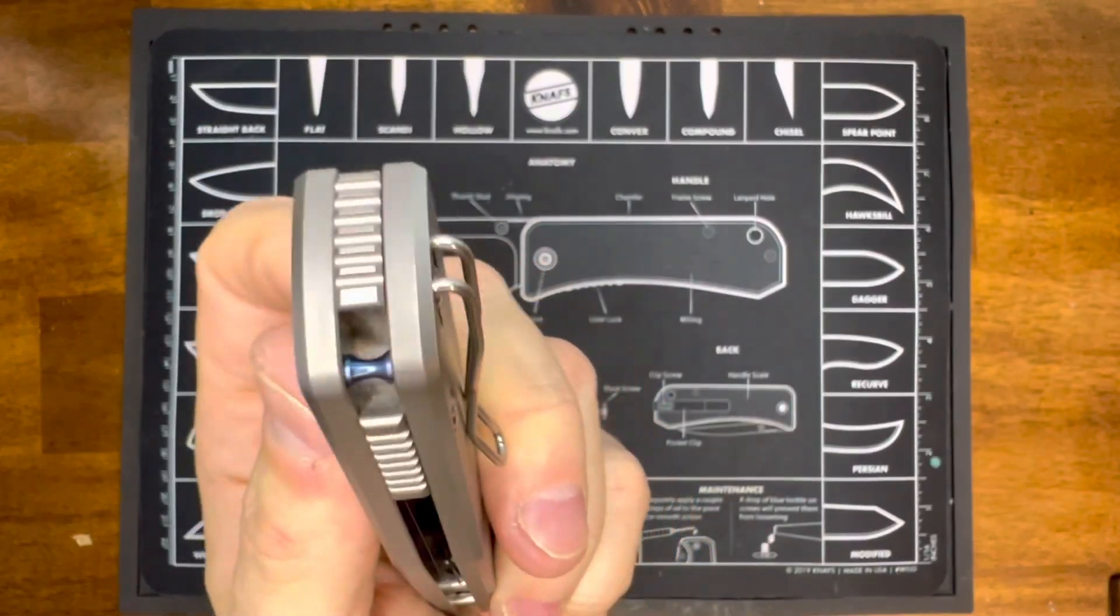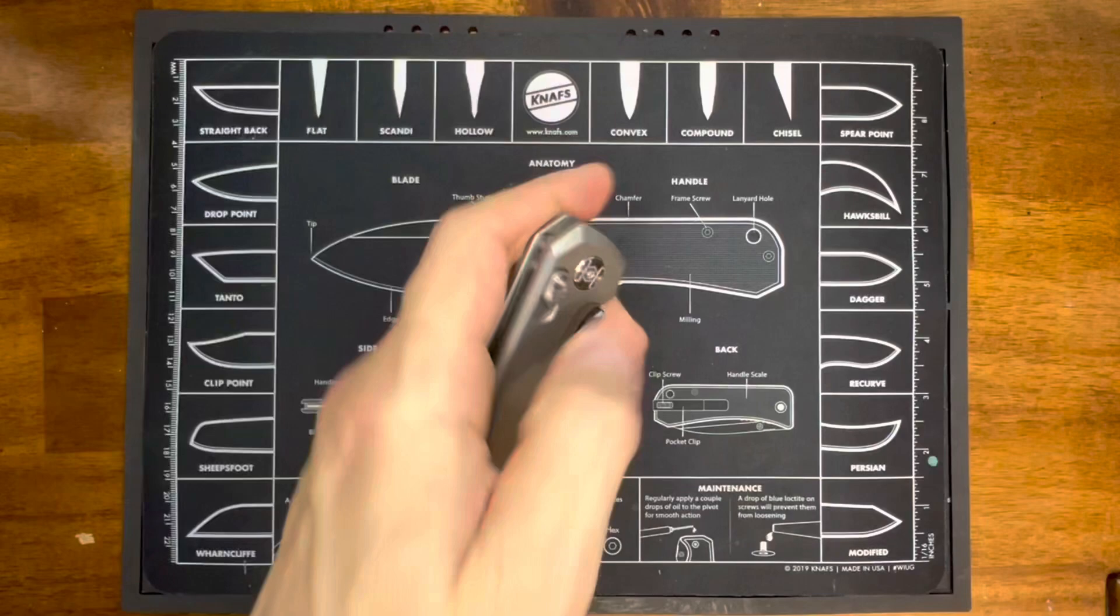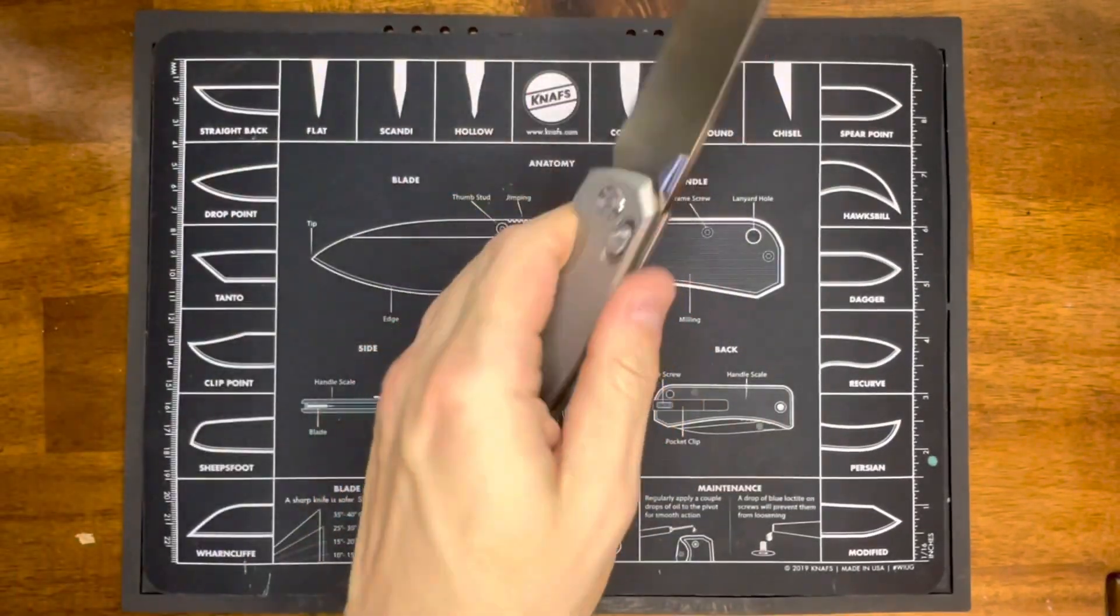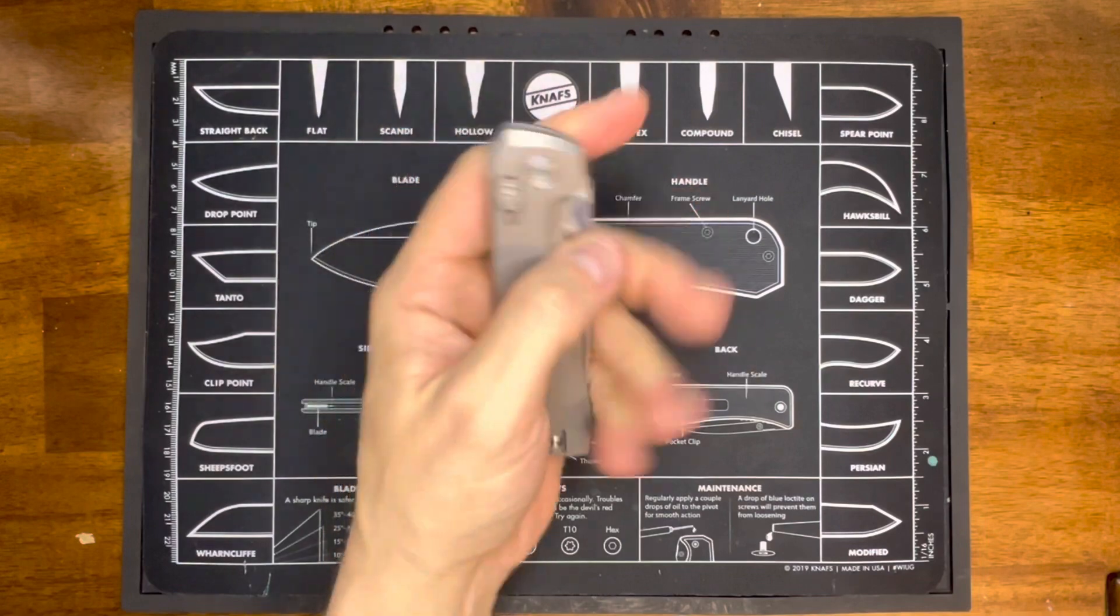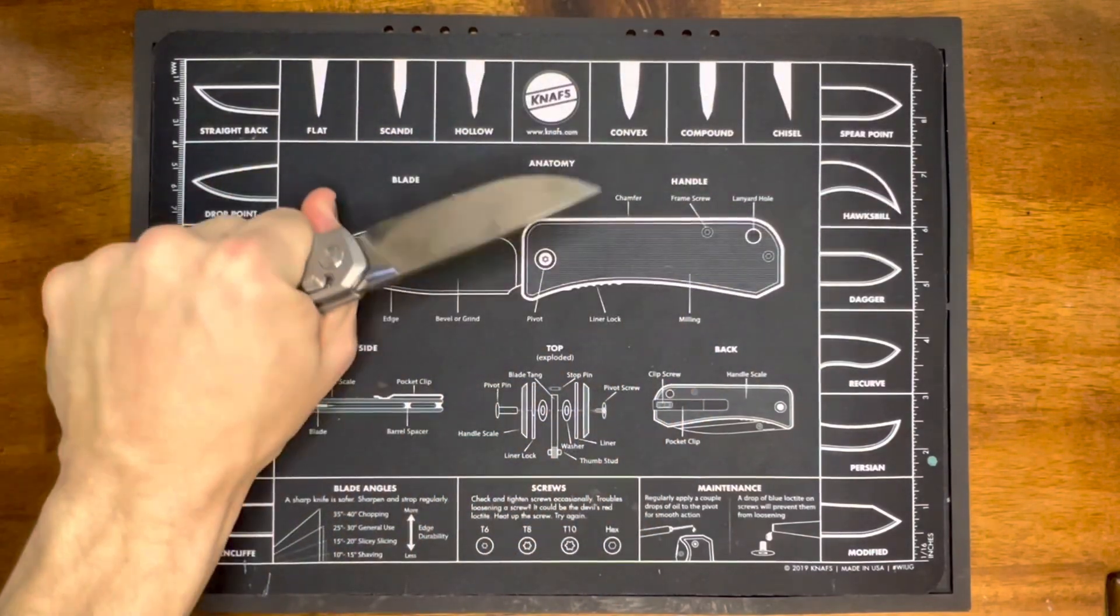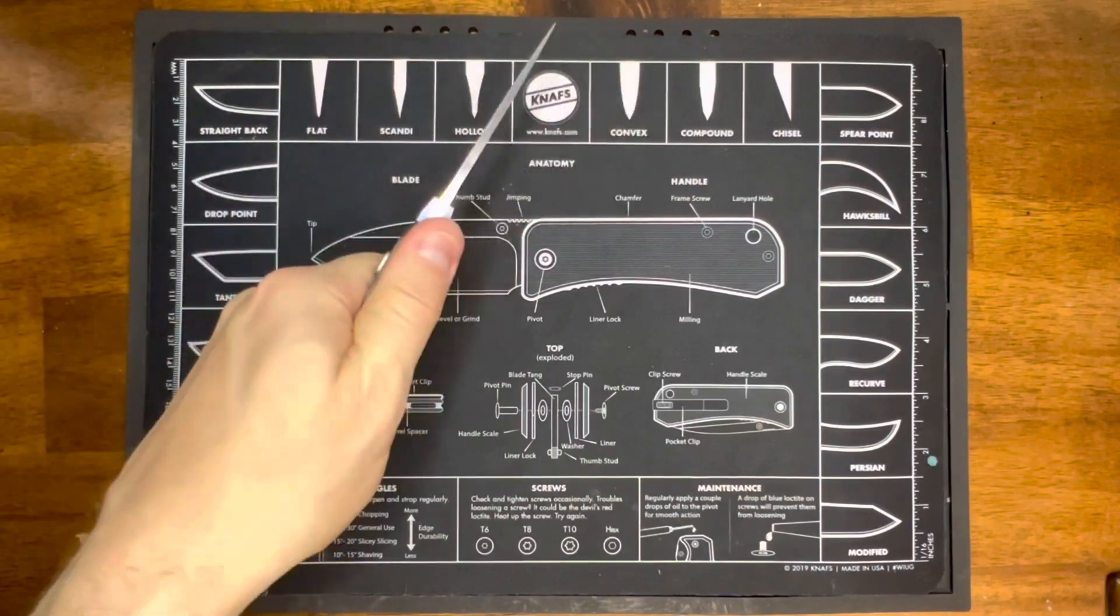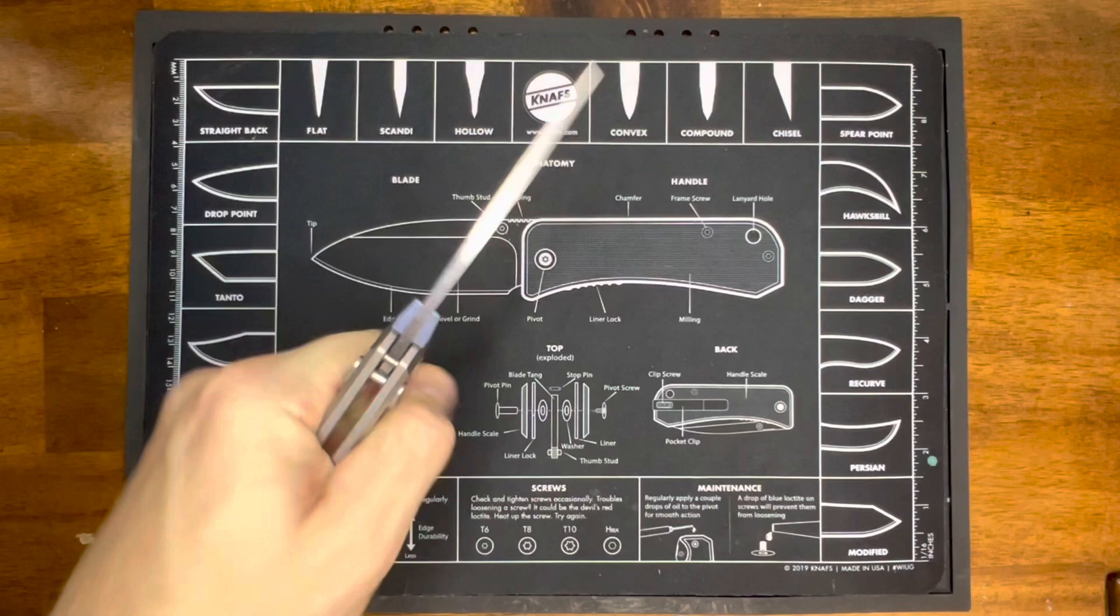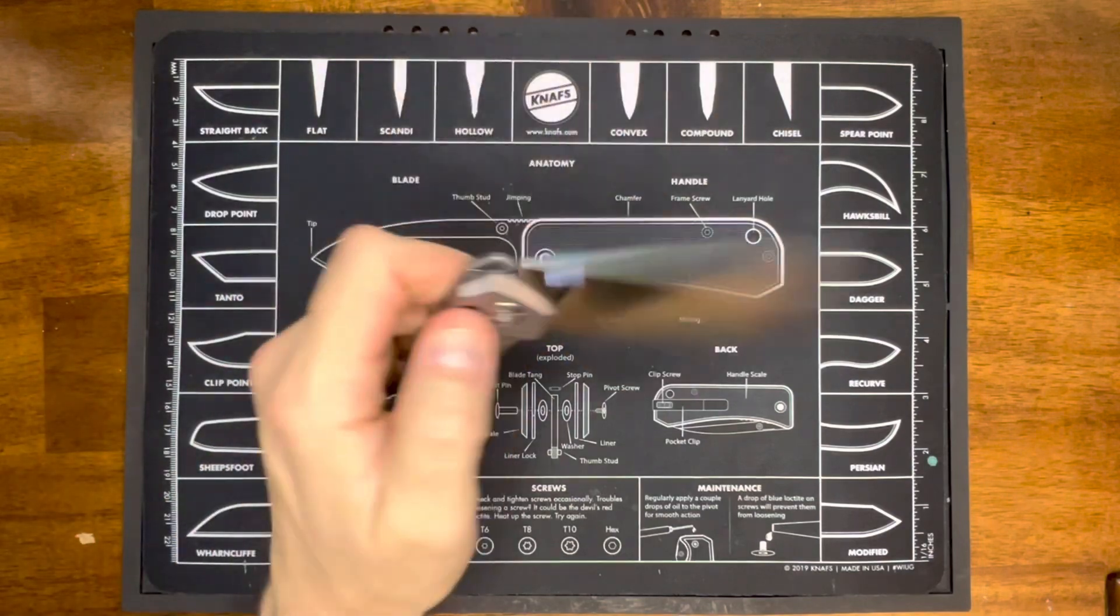It's got jimping on the back spacer which is nice. I wish it had jimping on the front for my thumb because it's just smooth. With the ergonomics of the thing, when I grip it, when I'm using it, it feels like I'm holding a knife. It doesn't feel like I'm trying to get a choke hold on a porcupine or anything. Yeah, it's a solid knife.